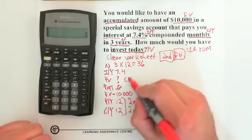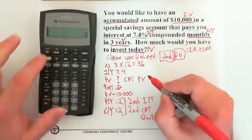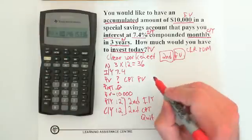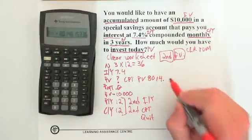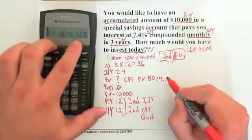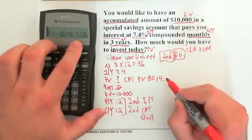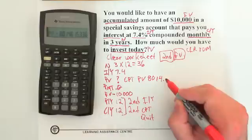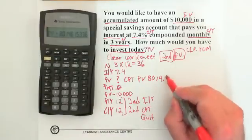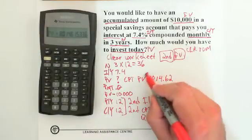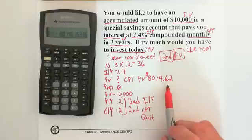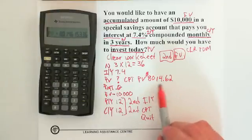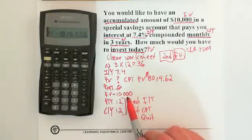PV is what we want to solve for, so press CPT then PV. The third decimal is 5, so the second decimal rounds up. Our answer is $8,014.62 — that's how much you have to invest today to accumulate $10,000 in three years.